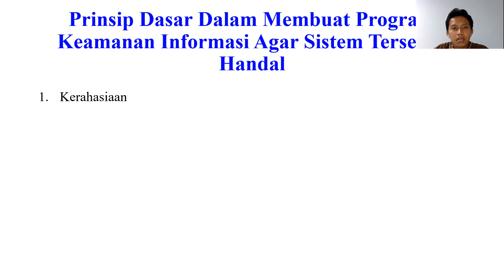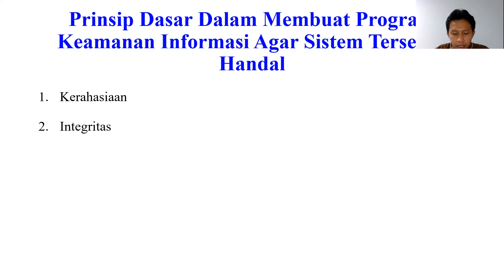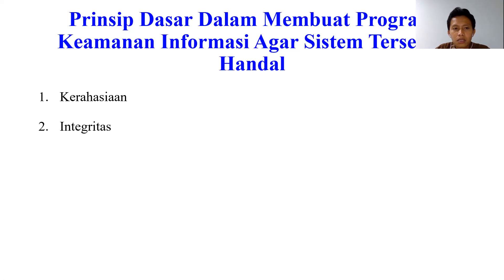Kemudian prinsip yang kedua adalah integritas. Integritas artinya informasi dijaga agar selalu akurat; untuk menjaga informasi tersebut, maka informasi hanya boleh diubah dengan izin pemilik informasi. Virus Trojan merupakan contoh dari informasi yang integritasnya terganggu, karena virus telah mengubah informasi tanpa izin. Integritas informasi ini dapat dijaga dengan melakukan enkripsi data atau membuat tanda tangan digital.